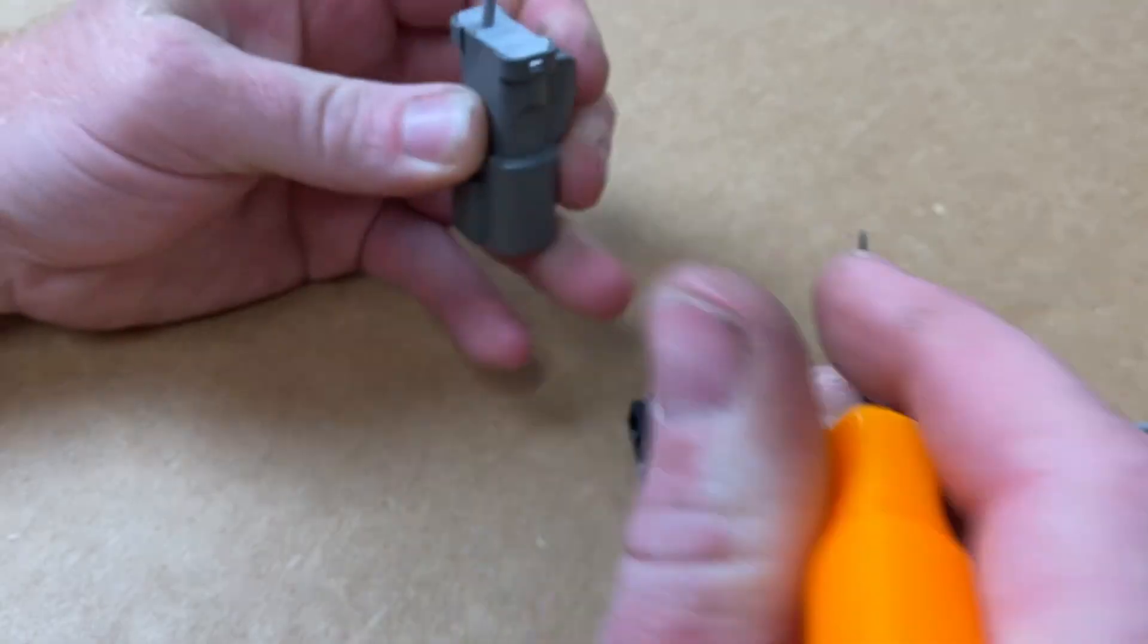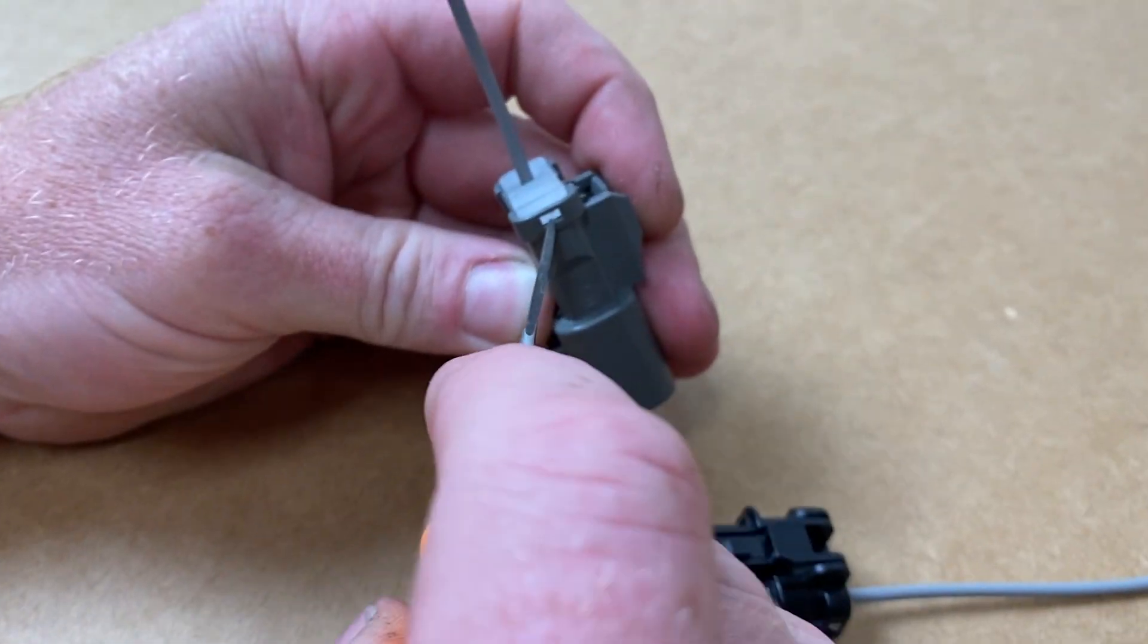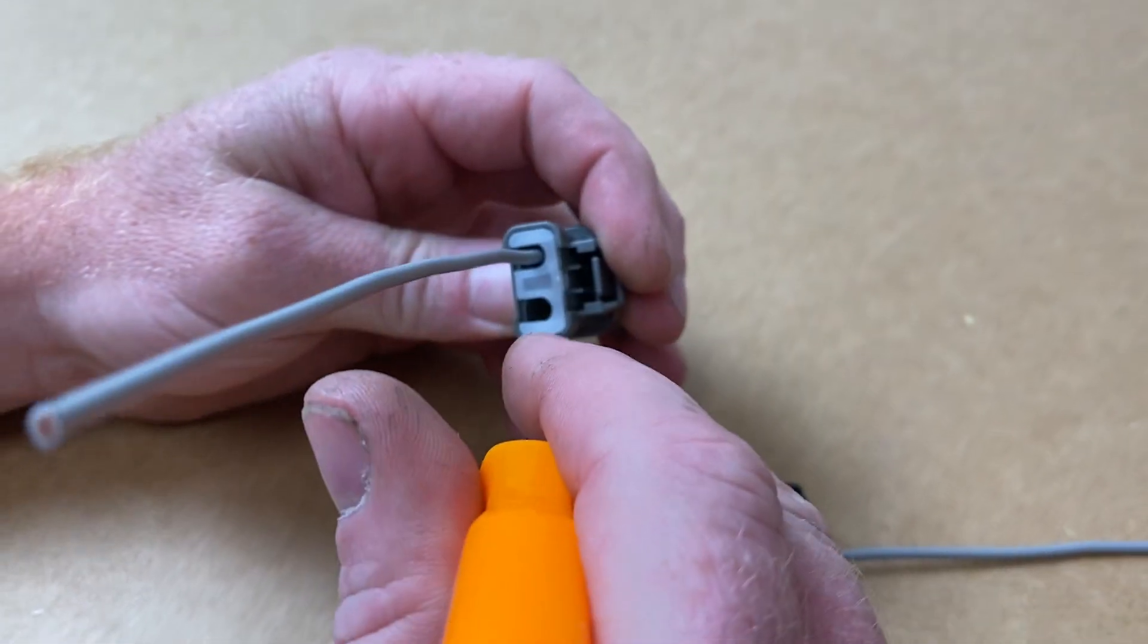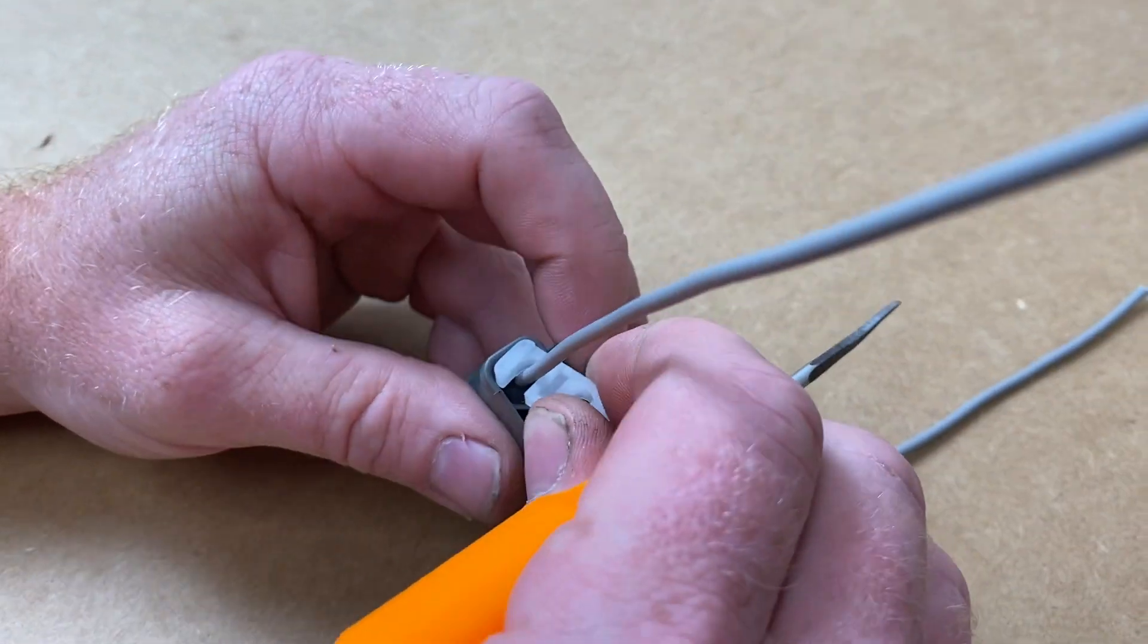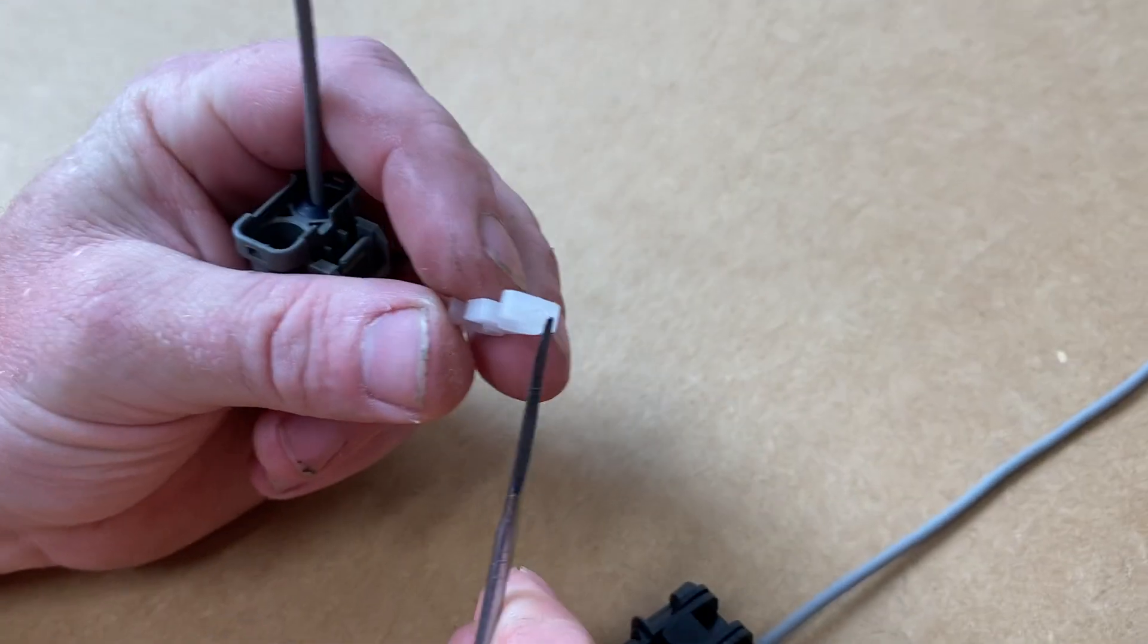So first, there's these little tabs on the side here. We're just going to kind of pry and lift that up. And then you can see the little tabs right there.